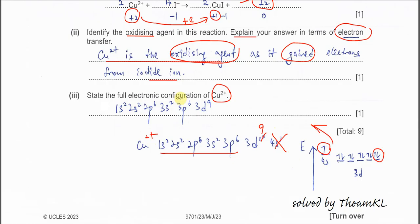So the electron configuration for this copper two will be 1s2, 2s2, 2p6, 3s2, 3p6, 3d9. That's all for this first question. Thank you.